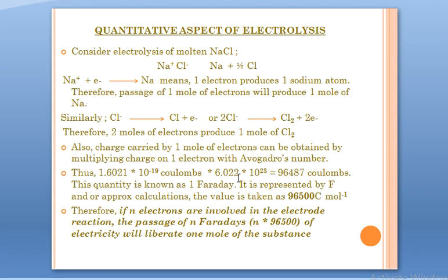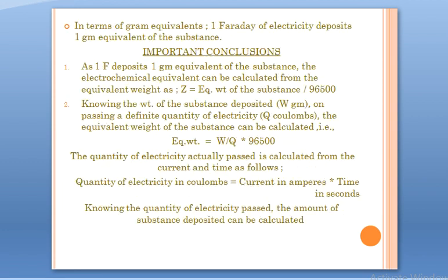If you know the quantity of electricity — calculated from current in amperes × time in seconds — you can calculate the amount of substance deposited. Knowing the quantity of electricity passed, the amount of substance deposited can be calculated. We will do numericals based on the laws and quantitative relationships in Google Classroom.